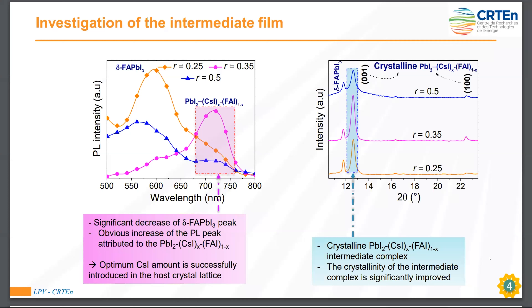We started with the investigation of the intermediate film, which can greatly affect the final perovskite film. For the intermediate film, we measured X-ray diffraction patterns and found that we can obtain a crystalline intermediate complex formed from the mixture of lead iodide, cesium iodide, and formamidinium iodide. The crystallinity of the intermediate complex is significantly improved when we increase the ratio between cesium iodide and lead iodide.